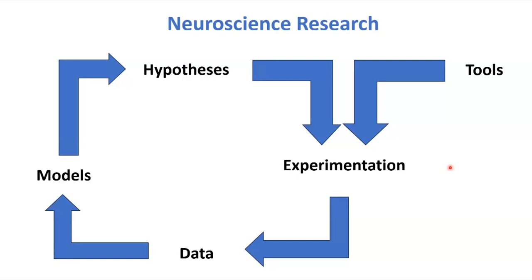Neuroscience research is a very broad process. We build models of the brain on many levels — computational models, vascular models — and that basically drives our hypotheses. Tools allow us a parameter space in which to explore, and then we get data and fill out the models.